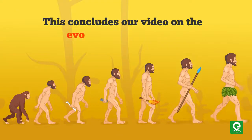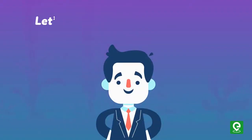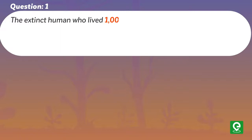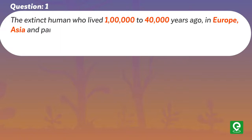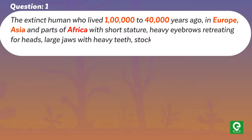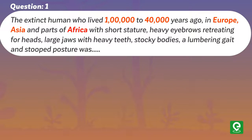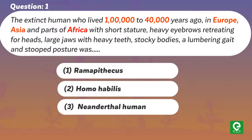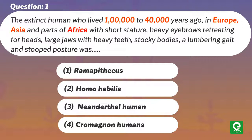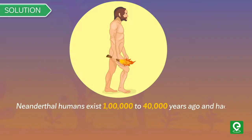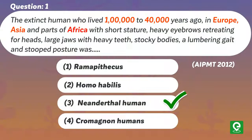Question 1: The extinct human who lived 100,000 to 40,000 years ago in Europe, Asia, and parts of Africa — with short stature, heavy eyebrows, retreating forehead, large jaws, heavy teeth, stocky bodies, and a stooped posture — was which of the following? (1) Ramapithecus, (2) Homo habilis, (3) Neanderthal human, (4) Cro-Magnon humans. This was asked in AIPMT 2012. Solution: Neanderthal humans existed 100,000 to 40,000 years ago. Hence, option 3 is correct.